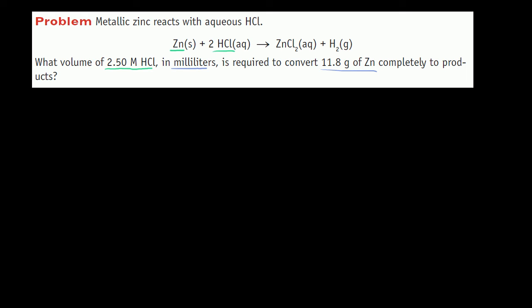Before we do anything, let's verify that this is really a balanced equation. You have one zinc on the left-hand side, one zinc on the right-hand side, two hydrogens on the left, two hydrogens on the right, two chlorines on the left, two chlorines on the right. So it looks balanced.